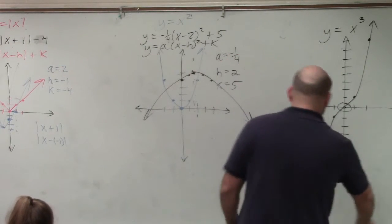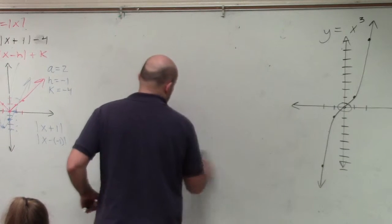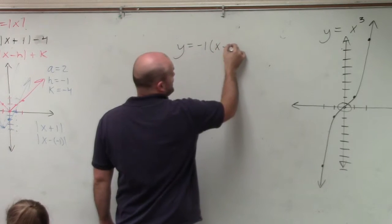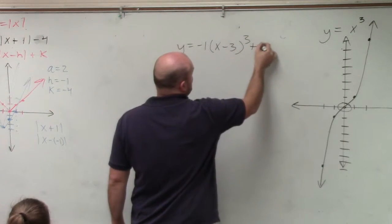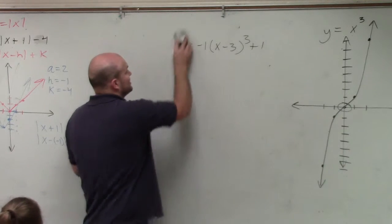So let's pretend, I just want to show you guys something. We're going to run out of time. So if you guys had y equals negative 1 times x minus 3 cubed plus 1, and I said find the zeros, the first thing we always want to do is set it equal to 0, right?